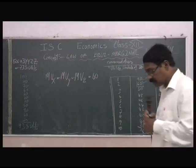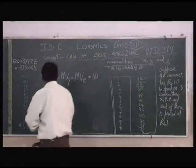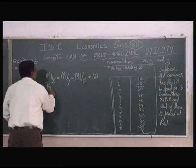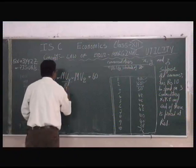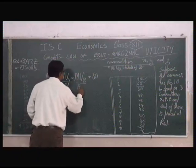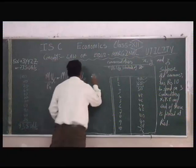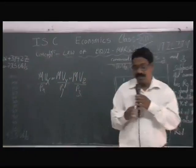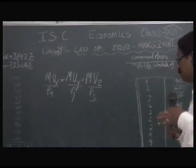MUX by PX, MUX by PX, MUY by PY, MUZ by PZ. This is the equilibrium condition of this is equal to MU.